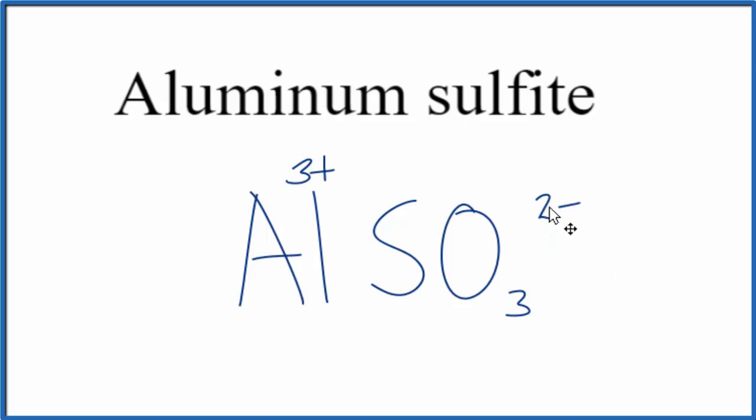We can use the crisscross method to help us here. We put a 2 here and the 3 out here. Then we need to put parentheses around the sulfite ion so this 3 is on the outside, giving us 3 sulfite ions.